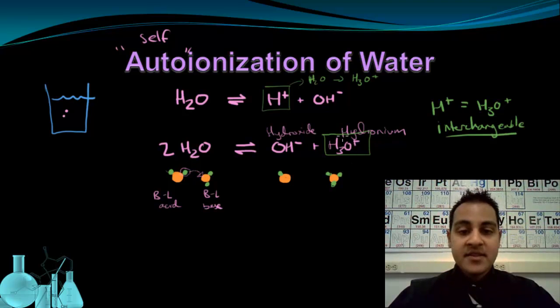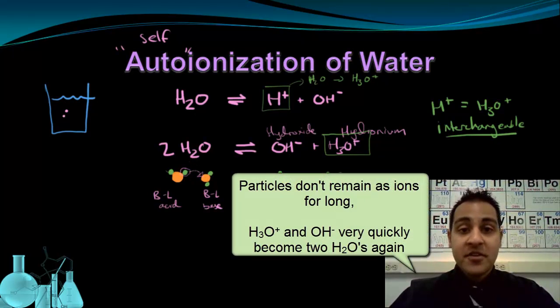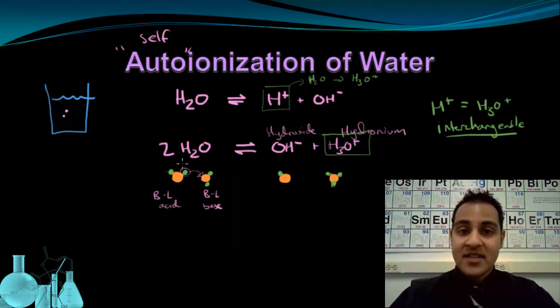Now, this auto-ionization does happen on its own, and it does happen regularly. But the particles don't last as ions very long. They actually reassemble back into the original water molecules very quickly. Because this doesn't happen very frequently, and the ions don't last very long before reassembling back into waters, you always have a very, very low concentration of hydroxide and hydronium ions in pure water.